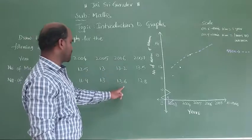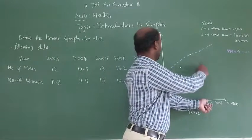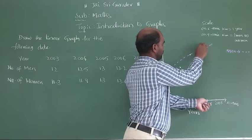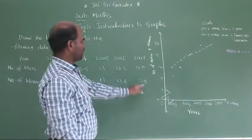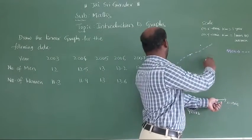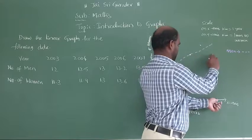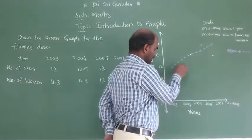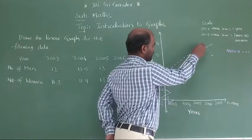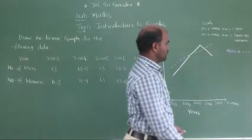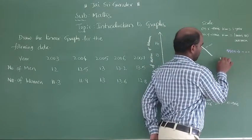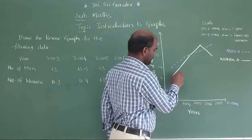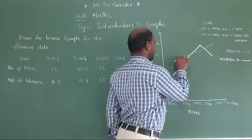Next, 2006. 2006, 13.6. 13.6 means the sixth line after 13. Next 2007, 12.8. 12.8 for women. Now this one you have to join with a straight line. This is men, this is women.